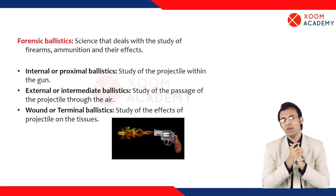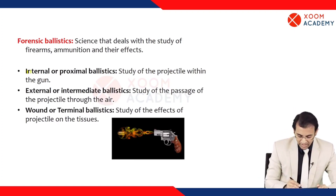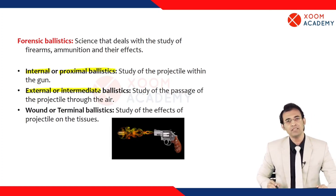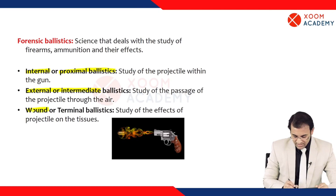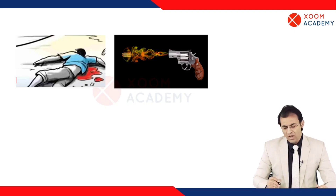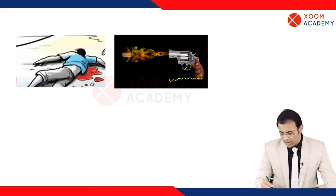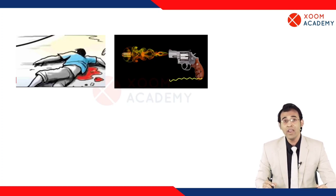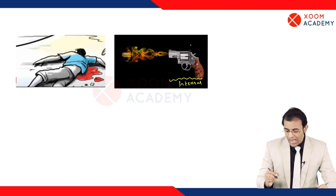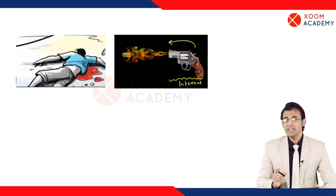When we learn about forensic ballistics, we have to study internal ballistics, which is also called proximal ballistics. This covers what a firearm is and how a bullet will go out — how a firearm works. This entire part is called internal ballistics.